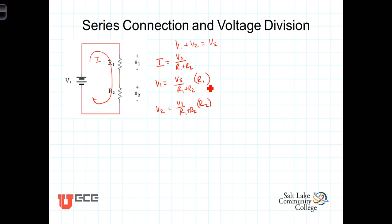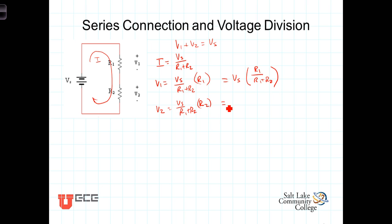Let's rearrange these two expressions, bringing Vs out in front and forming the ratio. For V1, we have Vs times R1 over R1 plus R2. And for V2, similarly, we have Vs times R2 over R1 plus R2.